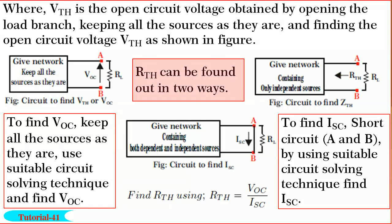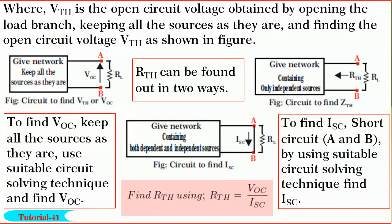R_th is the Thevenin's resistance, which can be obtained in two ways. First, if the given network contains all independent sources, make all independent sources zero — short circuit voltage sources and open circuit current sources — and find R_th by reducing the network. Second, if the network contains a combination of independent and dependent sources, keep all sources as they are, short circuit terminals A and B, find I_SC using a suitable circuit solving technique, and find R_th equal to VOC divided by I_SC.